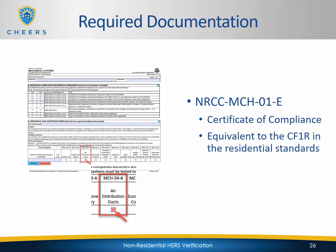Now let's look at the required documentation needed before performing your duct leakage test. The first document is the Certificate of Compliance, the NRCC-MEC-01E — equivalent to the CF-1R in residential standards. This is the design document. In Section B, the test description highlighted in the red box, if that box is checked, it indicates that a duct leakage test is required for that particular system via the MEC-04A.